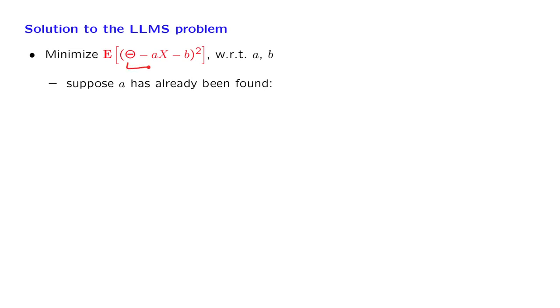And what do we have? We have a random variable minus a constant, and we want to choose that constant so that this difference squared is as small as possible in the expected value sense.